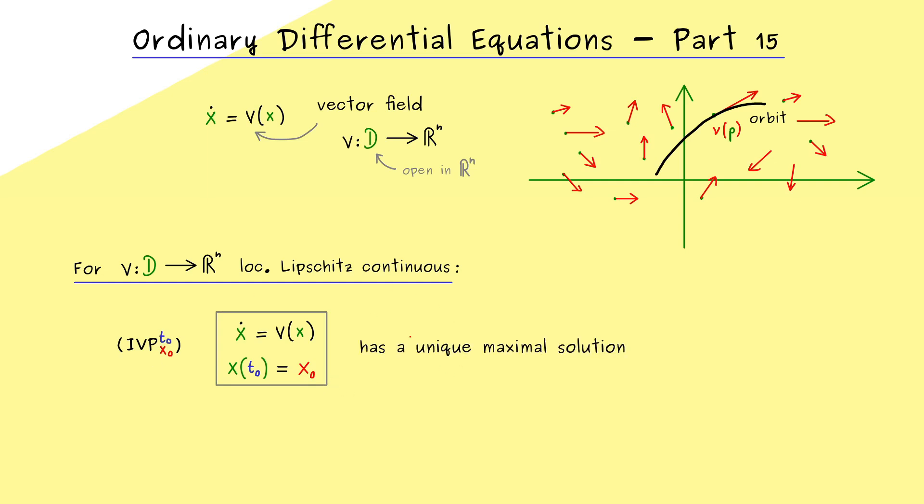In addition, the last video has told us that this initial value problem has a unique maximal solution. Which simply means that the domain for the solution alpha is given by an interval i and it cannot be made larger. So this is the best function we get as a solution for the initial value problem.